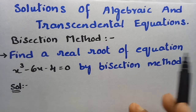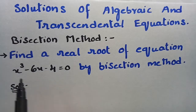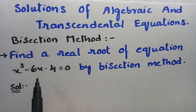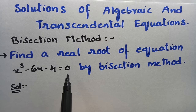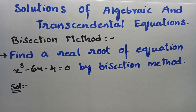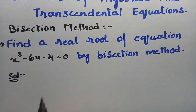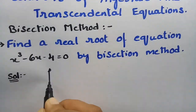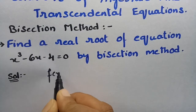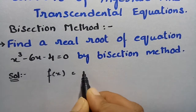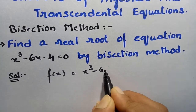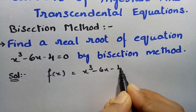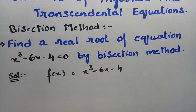We have to find the real root of the equation x cubed minus 6x minus 4 is equal to 0 by the bisection method. First of all, we have to consider this as f of x is equal to x cubed minus 6x minus 4.